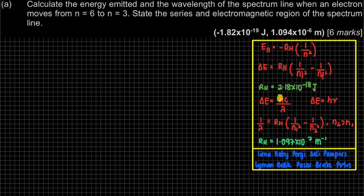Where H is Planck's constant and C is the speed of light — you can refer back to the list of constants. Over wavelength. Or you can use delta E = hν, where ν is your frequency. Again, H is your Planck's constant.